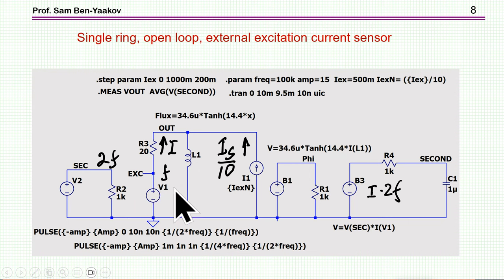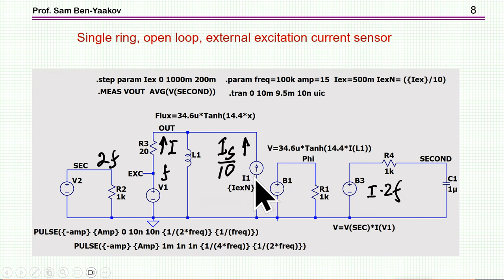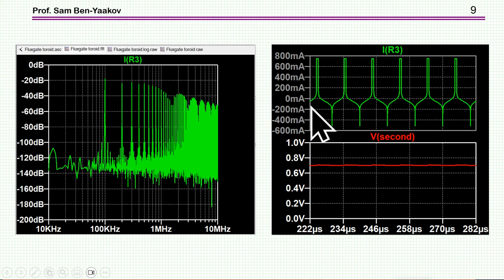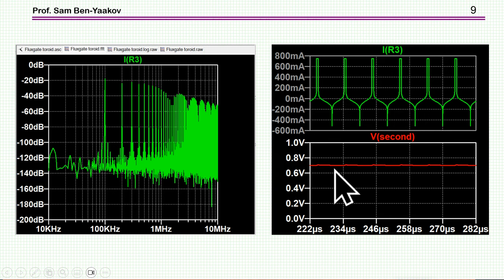Here is the excitation. We have the injection of the current which represents the measured current. Since I'm assuming 10 turns, in order to emulate this disturbance, the current needed here is only one tenth of the actual measured current. Here is twice the switching frequency, which is multiplied by the current to get a signal proportional to the second harmonic.